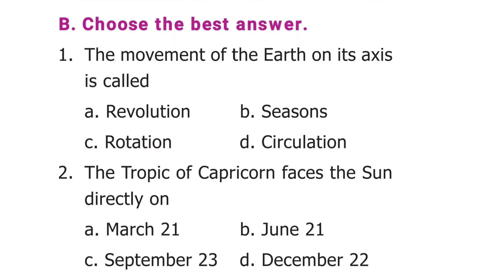The next section is choose the best answer. The first question is: the movement of the Earth on its axis is called. We have four options. The correct answer is option C, rotation.